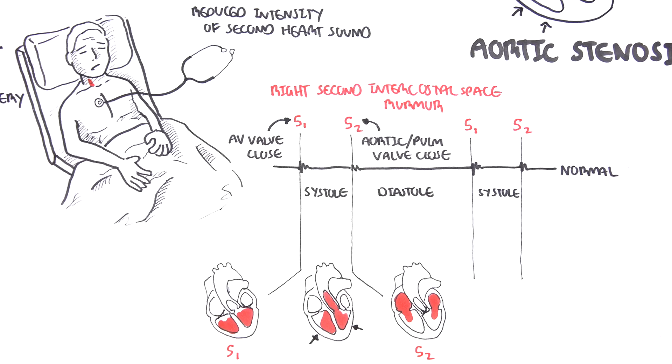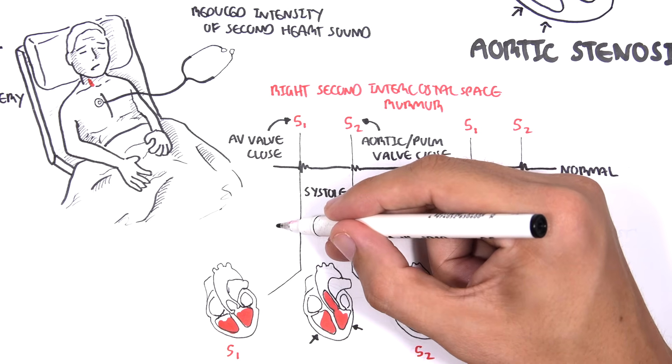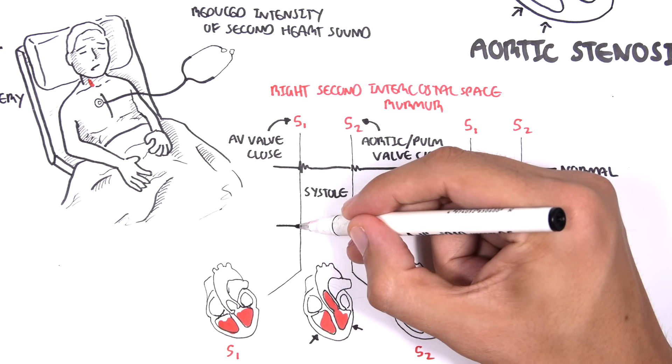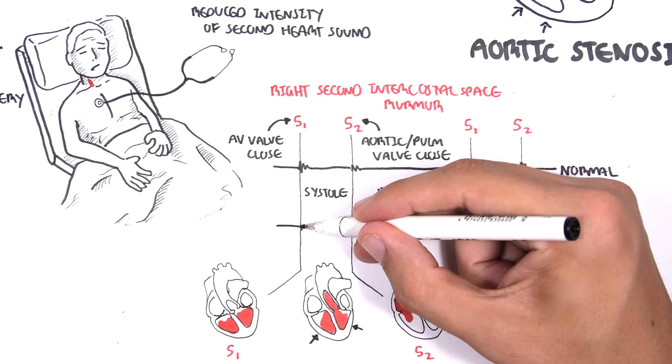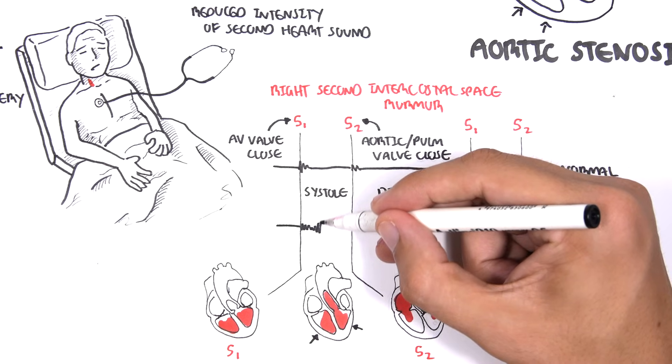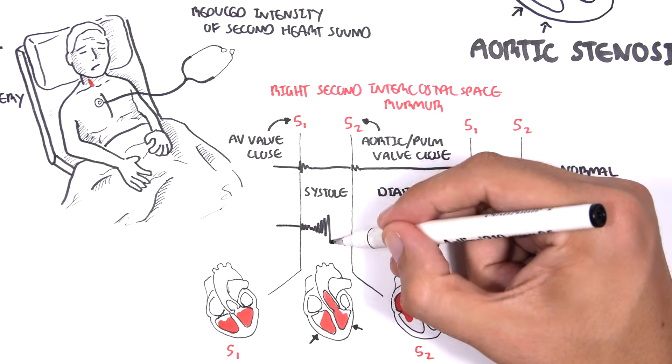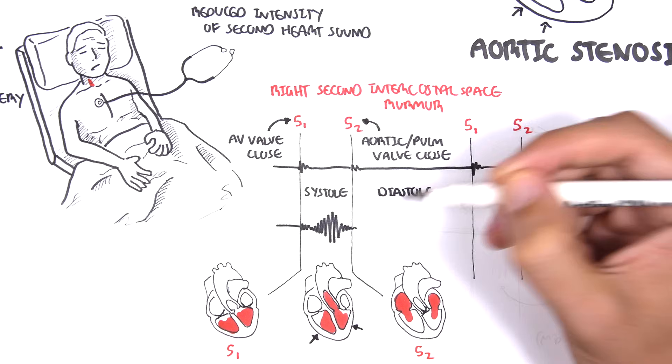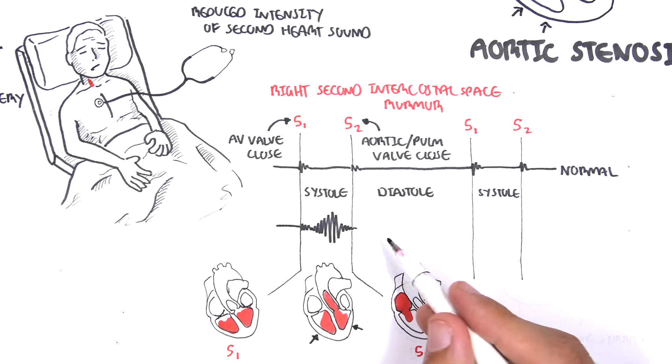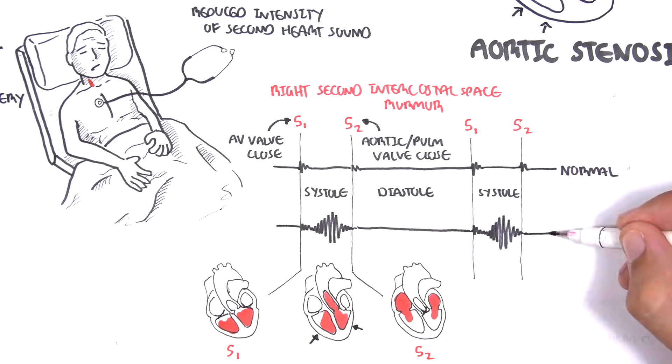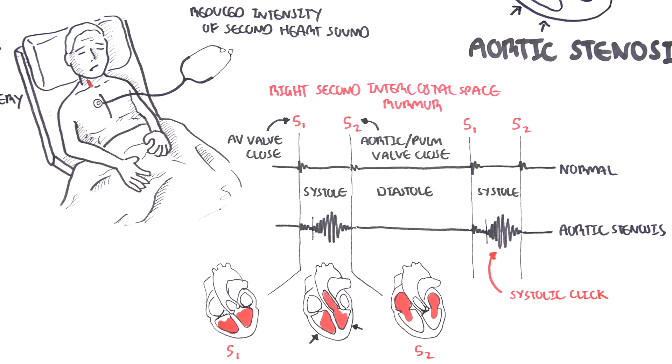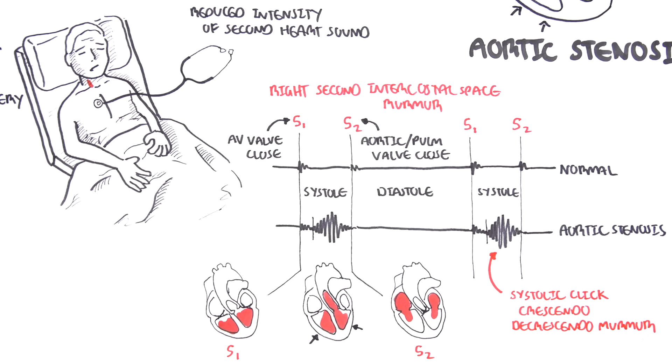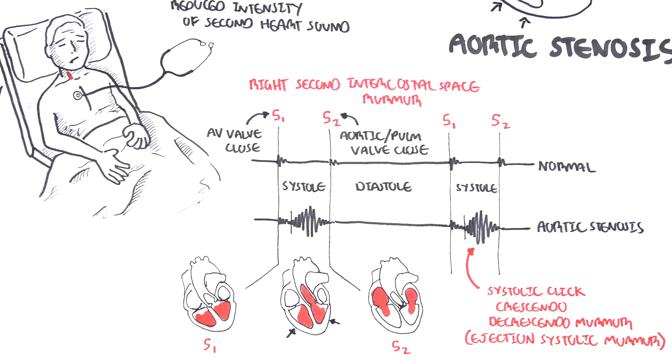In aortic stenosis, the murmur we hear begins at S1 when the atrioventricular valve closes. And then we hear the aortic valve open. The blood is being squeezed through the aortic valve slowly, and so we get this greater turbulent flow until the ventricles relax again and the aortic valve closes. We call the aortic stenosis murmur a systolic click crescendo decrescendo murmur, or ejection systolic murmur.